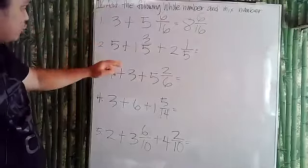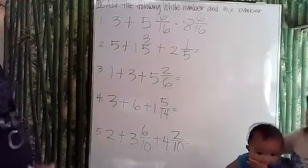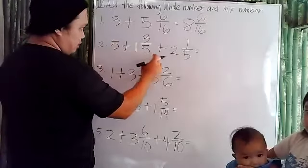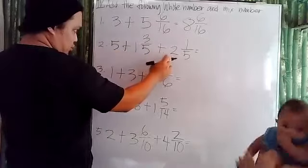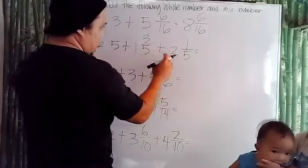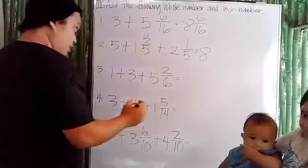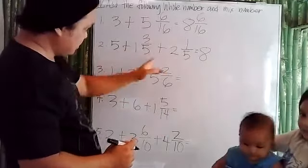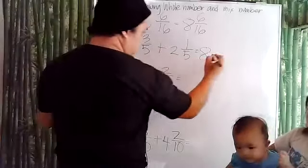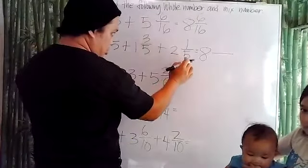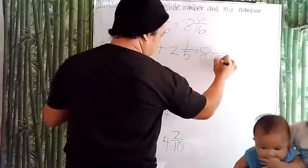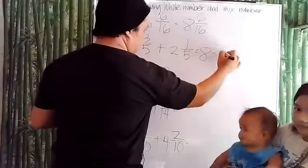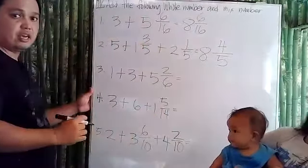Number two, we have five plus one and three-fifths, plus two and one-fifth. Let's add first the whole numbers: five plus one is six, plus two is eight. So we have eight. And we need to add the fractions, which are similar to each other because we have the same denominator. So we copy the common denominator, which is five, and add their numerators: three plus one is four. Therefore, our answer here is eight and four-fifths.